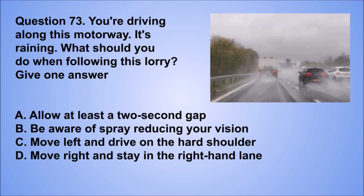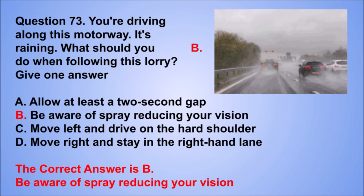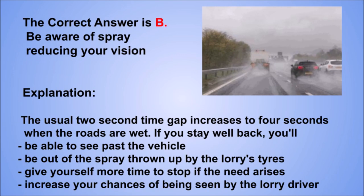Question 73. You're driving along this motorway. It's raining. What should you do when following this lorry? Give one answer. A. Allow at least a two-second gap. B. Be aware of spray reducing your vision. C. Move left and drive on the hard shoulder. D. Move right and stay in the right-hand lane. The correct answer is B, be aware of spray reducing your vision. The usual two-second time gap increases to four seconds when the roads are wet. If you stay well back, you'll be able to see past the vehicle, be out of the spray thrown up by the lorry's tires, give yourself more time to stop if needed, and increase your chances of being seen by the lorry driver.